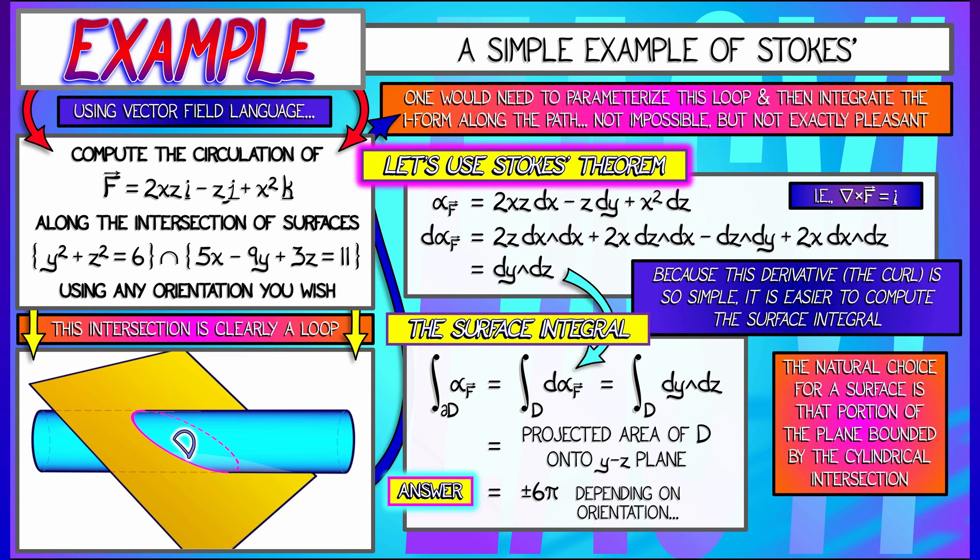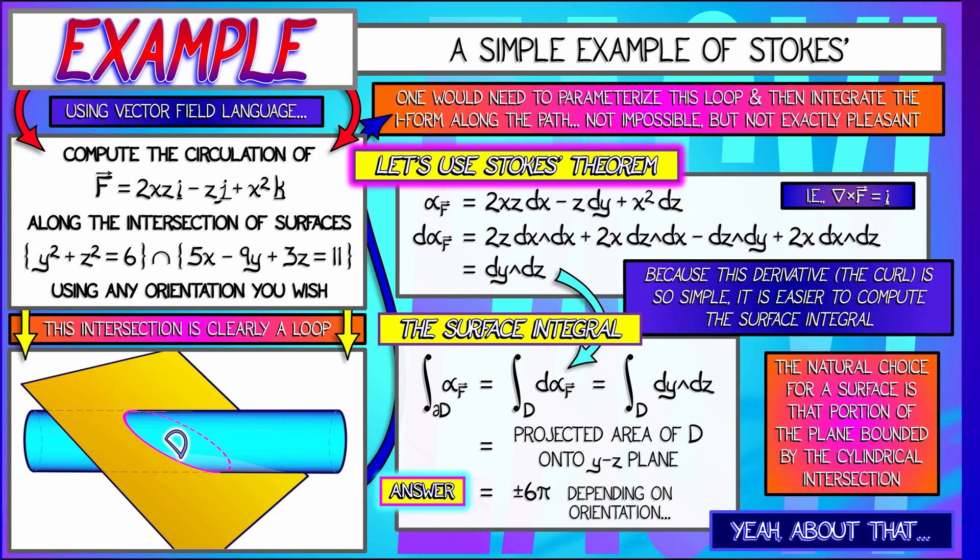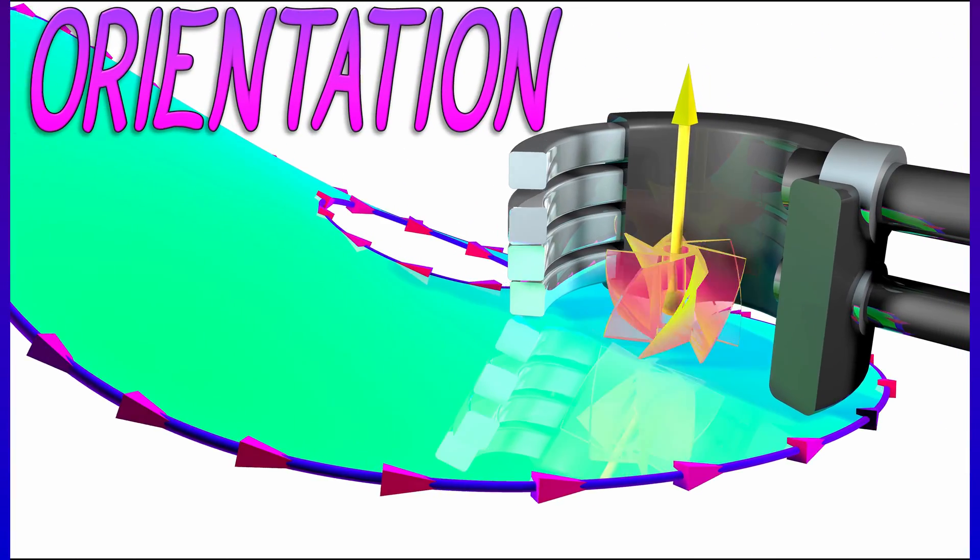Now, I said we weren't going to worry about orientation, but eventually we do. So what do you do? How do you relate the orientation of the surface to the orientation of the boundary curve? This is a little bit tricky. You have to be careful.